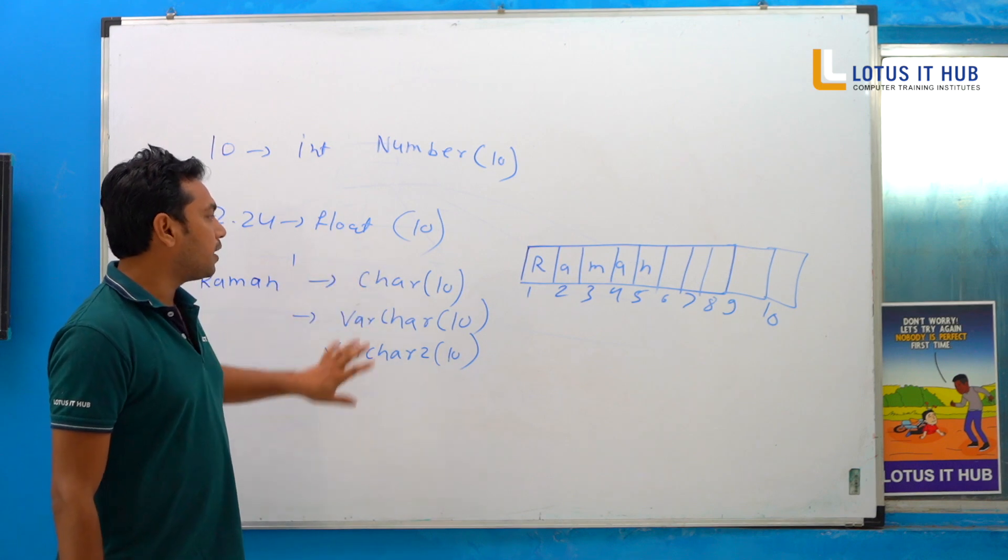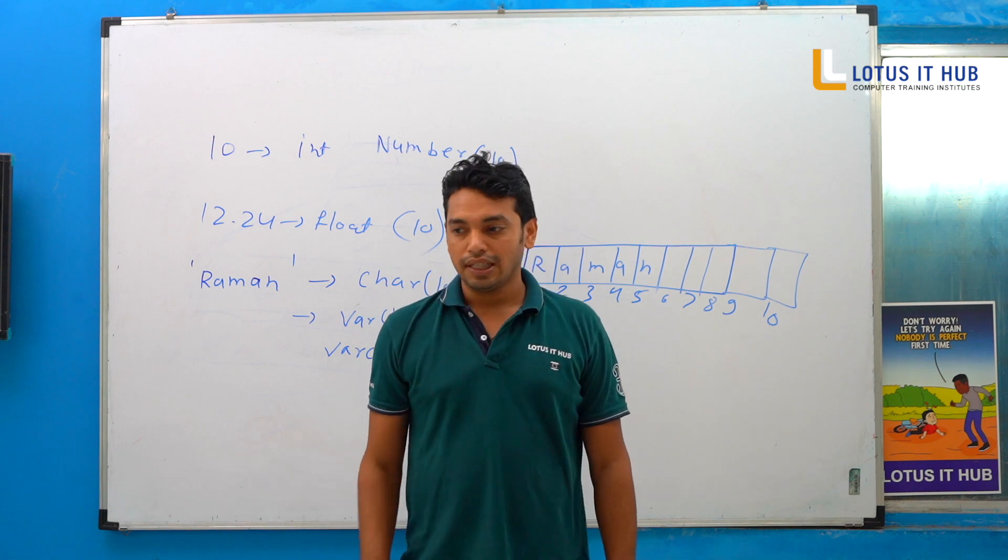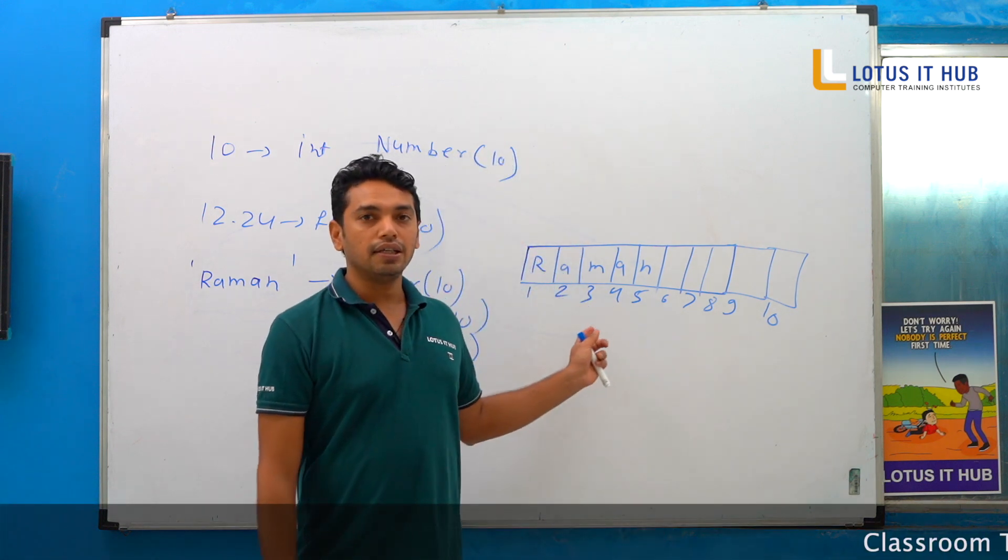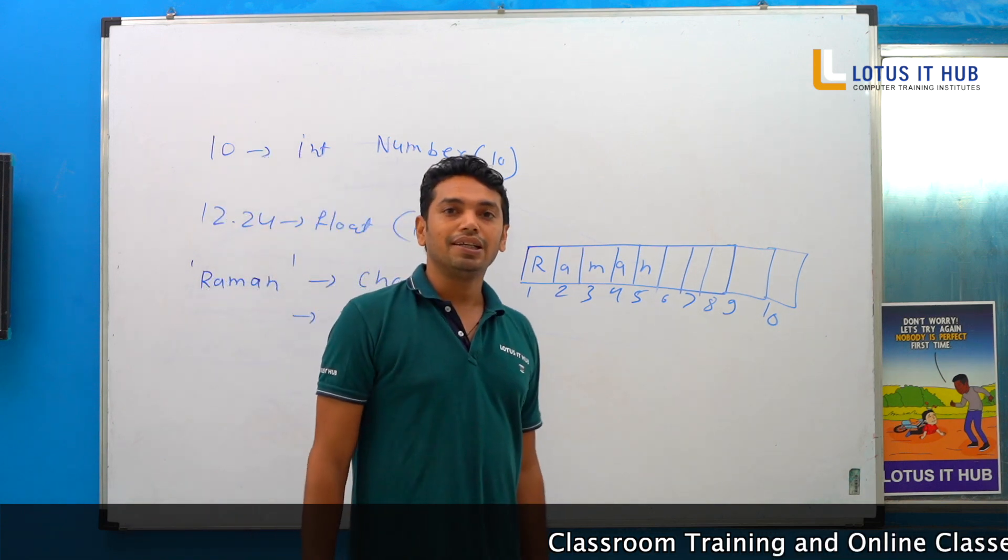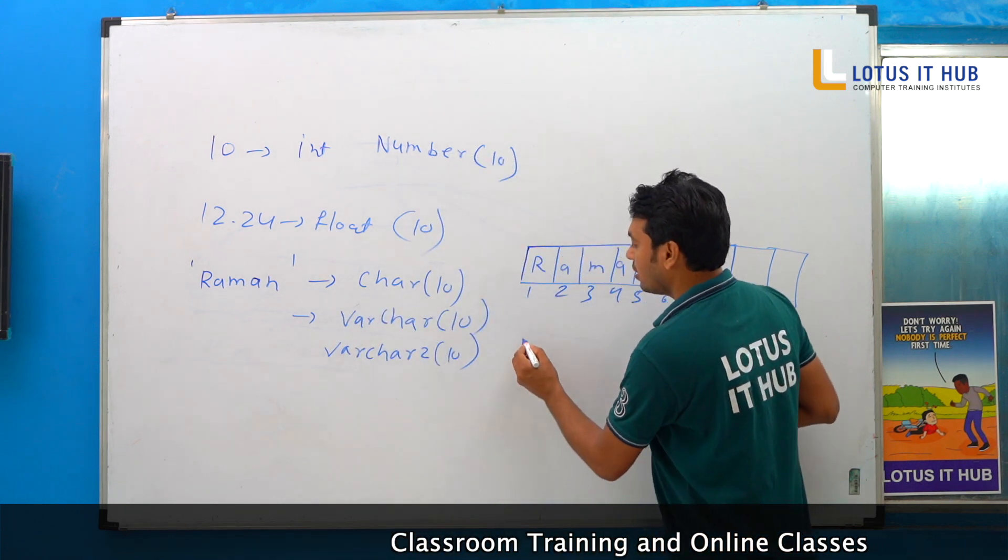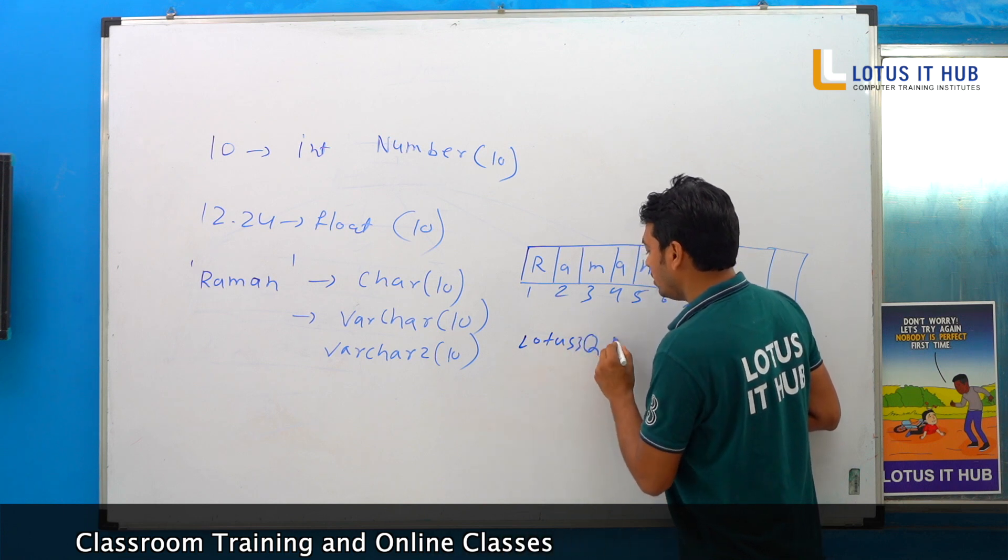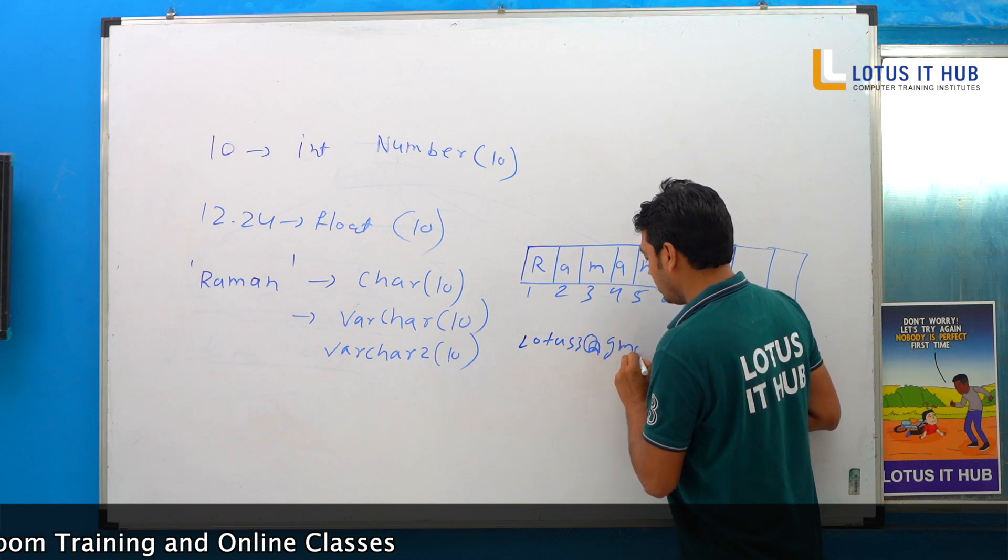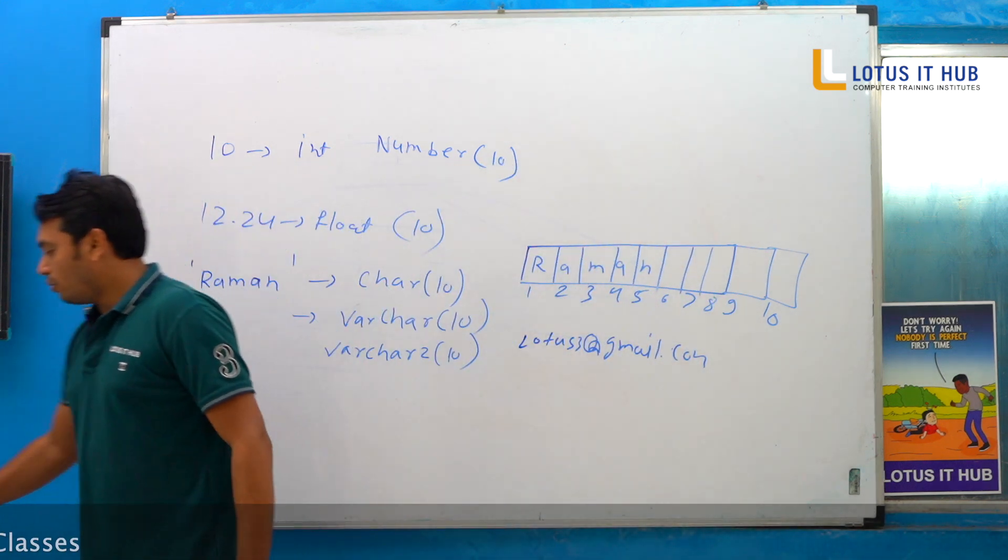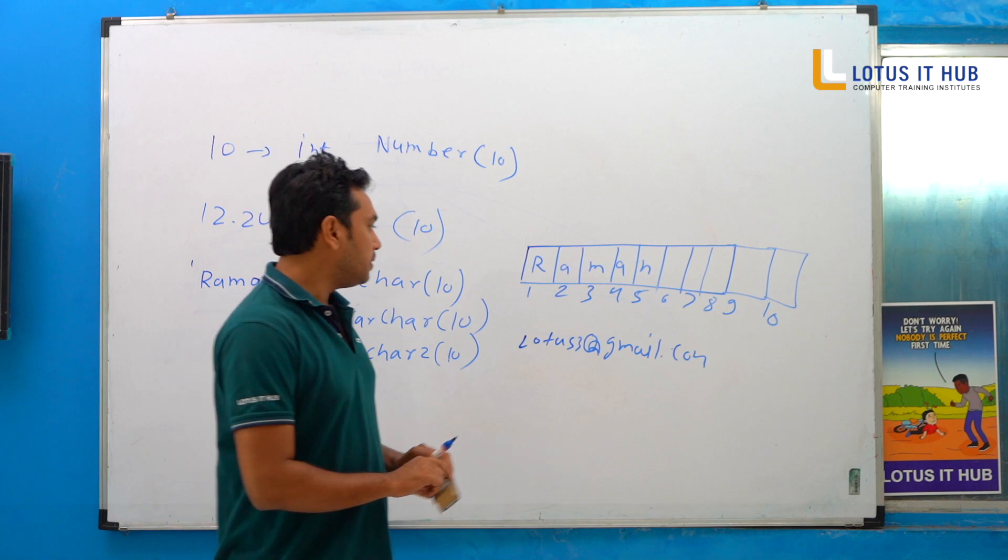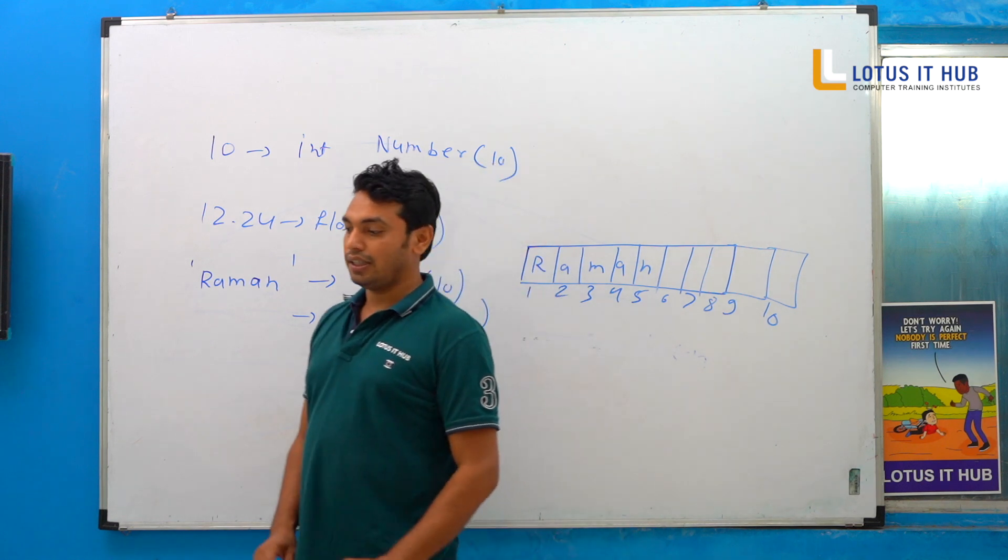Now we'll discuss CHAR or VARCHAR2, CHAR differences. First, CHAR is a collection of characters only. CHAR is a collection of characters only. VARCHAR is a combination of alphanumeric special symbols. Suppose we are writing here lotus@gmail.com, anything you can write there. Anything you can write, which is possible in your VARCHAR. But in CHAR, we can store only character data type. Is it clear?